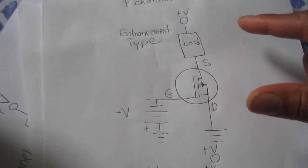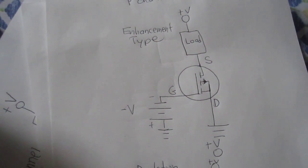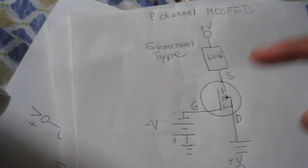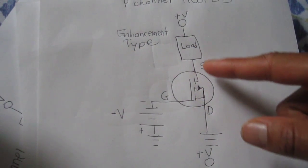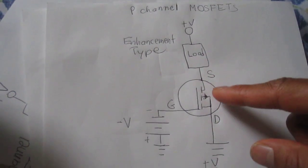An enhancement p-channel MOSFET needs voltage to the gate terminal in order for the transistor to turn on and conduct power to the load.